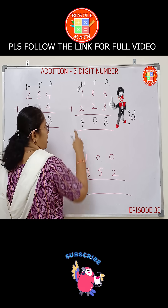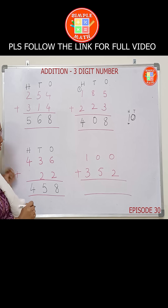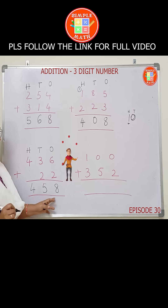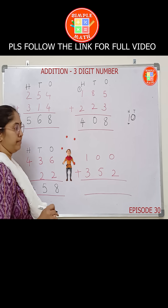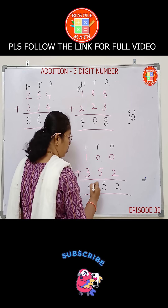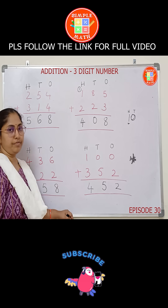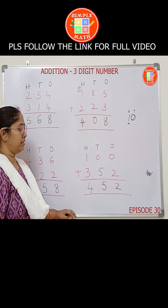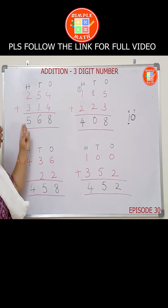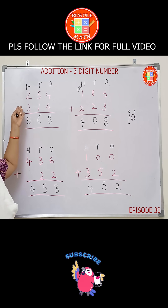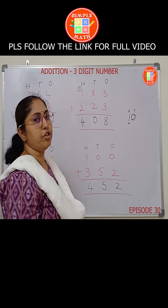After addition, the sum is 408. The sum is 458. The sum is 452. So this is the addition of a 3-digit number by a 3-digit number. Let's see a few more examples involving carrying.